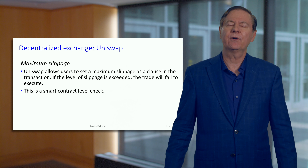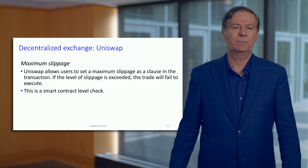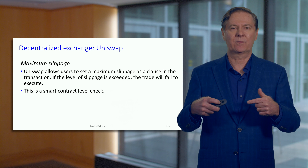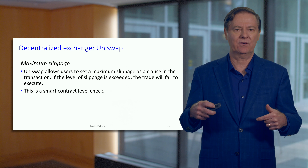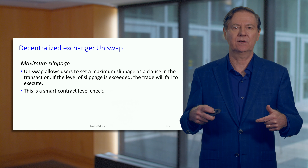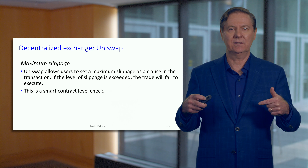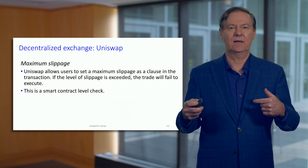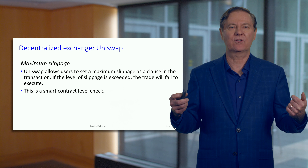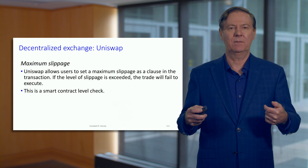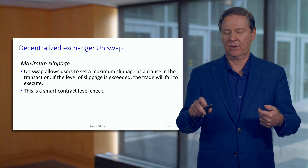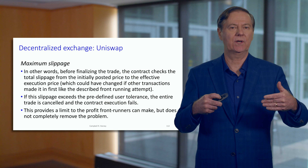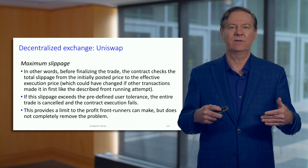Uniswap also offers something interesting: maximum slippage. Within the transaction, you can specify that if the rate slips to anything below a certain threshold, don't execute the transaction. This check is built into the contract — if the slippage is above the maximum, the transaction is atomic and reverts, so the trade doesn't actually execute. It's a nice idea that lets you specify a level of slippage you're comfortable with, providing an important degree of risk management.